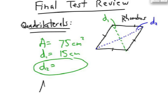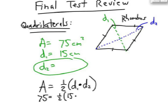The formula for the area of a rhombus is 1 half D1 times D2. So, if I know both diagonals, I multiply them together and take half of it. Well, the area is given to us as 75, and the D1 diagonal is 15, and so now I'm looking for D2.